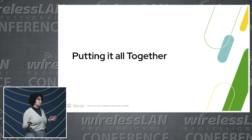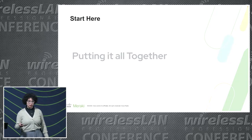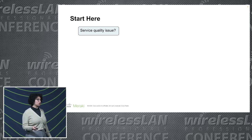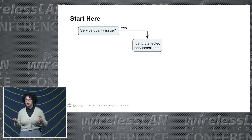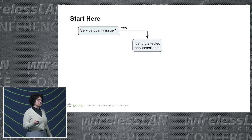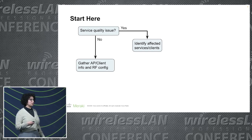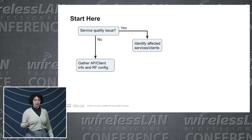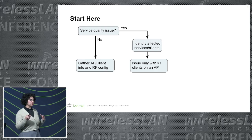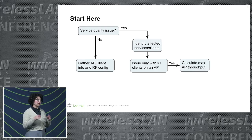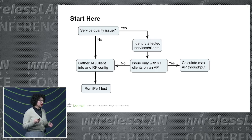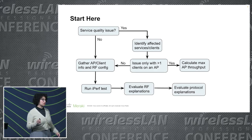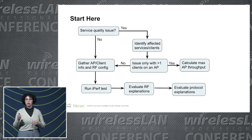So how do we take all these factors and put them together usefully? Start by asking: is your throughput issue a result of a quality issue with an application? If so, identify specifically what applications and what clients are affected — for example, is it only Apple clients on WebEx or Android clients on Zoom? If not, start gathering hardware info for APs and clients, get your MCS index rates, and move on from there. If the issue only happens with lots of clients on one AP, investigate the maximum capability of that AP. Then run your iPerf test, move into RF causes, and finally check protocol-driven causes.